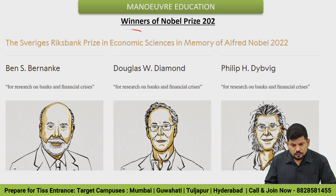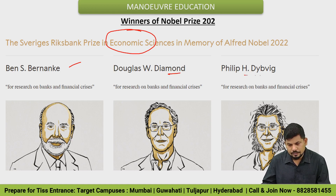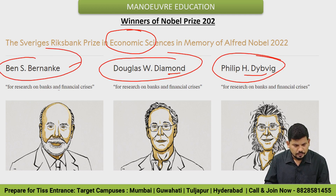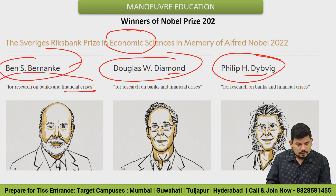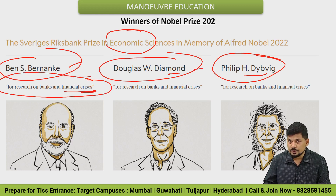The Nobel Prize for Economics 2022 was awarded to Ben S. Bernanke, Douglas W. Diamond, and Philip S. Dybvig. These personalities are recipients of the Nobel Prize for economics for their research on banks and financial crises. Remember what field it was for: research on banks and financial crises. These are all the current 2022 Nobel Prize recipients — remember them well as any one of these could be connected to a highly possible question in your exam.